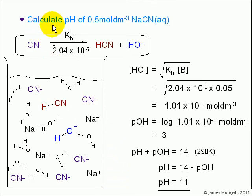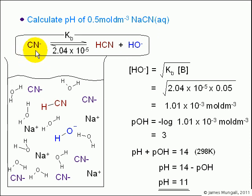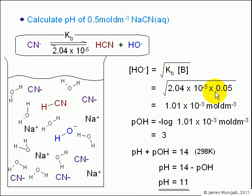Let's go through an example so that this mathematics starts to make practical sense. Calculate the pH of a 0.5 mol per decimetre cubed solution of NaCN(aq). That will contain the CN minus ion, and the CN minus ion will react with small amounts of water to give HCN and OH minus. Kb is given as 2.04 × 10⁻⁵. Using the equation for OH minus concentration, we put in the Kb value and the base concentration, multiply them together, and take the square root. That gives the concentration of the OH minus ion. To work out pOH, we do minus log of that, which comes out as 3.